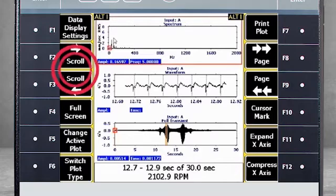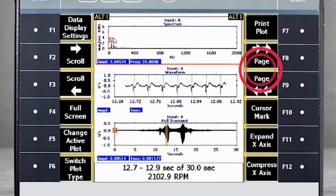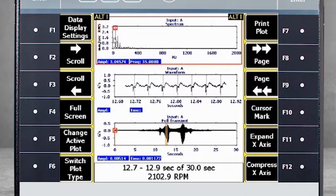What is the difference between scroll right or left and page right or left? The functionality is very similar. In the waveform, scrolling moves the cursor 512 data points with each jump.